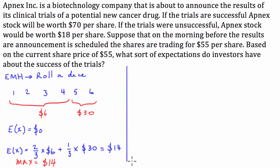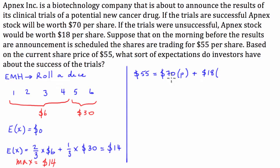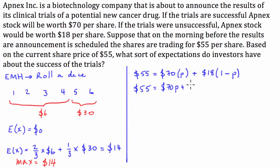is going to be equal to $70 times the probability that they're successful — let's call that P — plus $18 times the probability that they're unsuccessful. Because this is a binary situation, the probability of being unsuccessful is just 1 minus P, since P and 1 minus P must add up to 1. So using algebra: $55 = $70P + $18(1 − P), which expands to $55 = 70P + 18 − 18P.